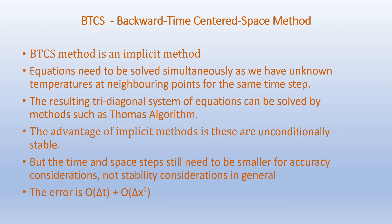This equation 6 cannot be solved explicitly, so we must use other methods — this is why BTCS is called an implicit method. The equations need to be solved simultaneously since we have unknown temperatures at neighboring points for the same time step. The resulting tridiagonal system of equations can be solved using methods such as the Thomas algorithm. The advantage of implicit methods is that they are unconditionally stable, though time and space steps still need to be small for accuracy. The error is of the order of delta t plus order of delta x squared.